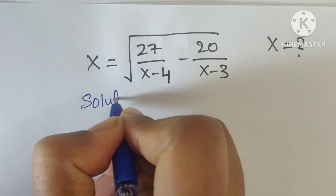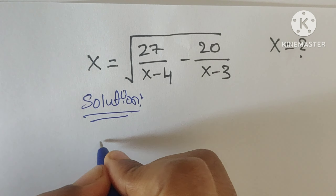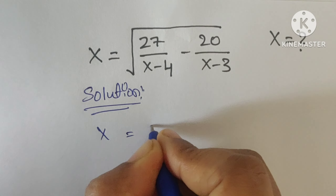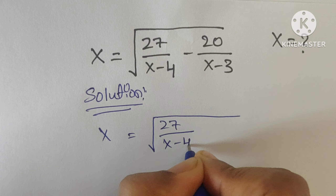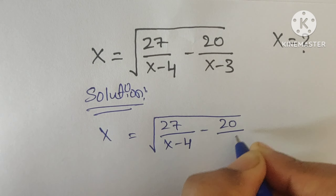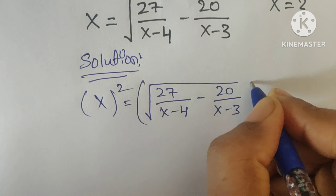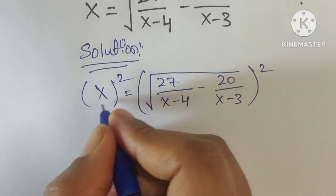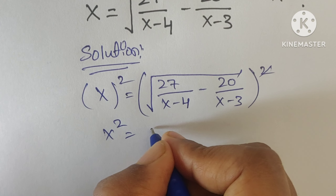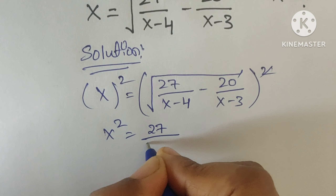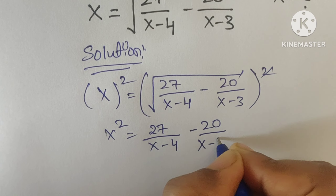Solution. We are given x equal to the square root of 27 by (x minus 4) minus 20 by (x minus 3). So apply squares on both sides. The square root gets cancelled, so we get x squared equal to 27 by (x minus 4) minus 20 by (x minus 3).